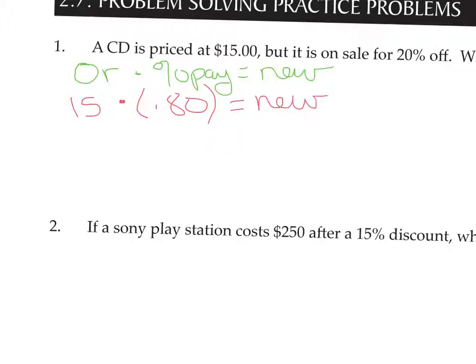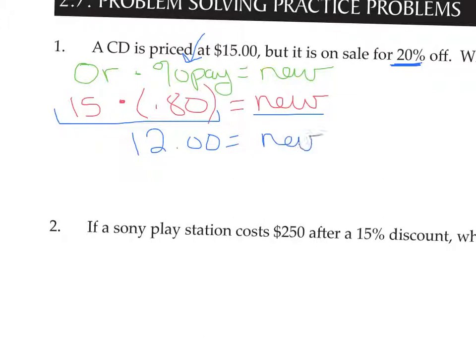We don't know what the new price is — that's what we're trying to find. To figure out the new price, we multiply the original price times 80%. I want to make sure you recognize I'm not using the 20%, because that involves having to do two steps. If we use whatever percent is left after we take 20% off, we're using 80%. So 15 times 0.8 makes $12 for the new price of the CD.